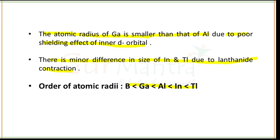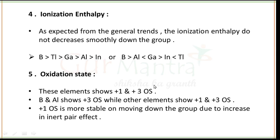Next is ionization enthalpy. Along the period, ionization enthalpy usually increases on account of increased effective nuclear charge. Group 13 elements have the lowest first ionization enthalpy compared to corresponding alkaline earth metals due to unstable electronic configuration. As expected from the general trend, ionization enthalpy does not decrease smoothly down the group, and you need to memorize the correct order for ionization enthalpy.